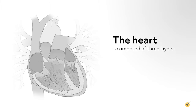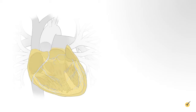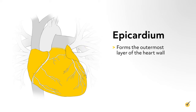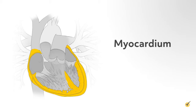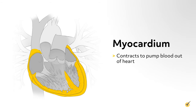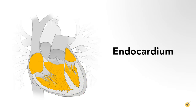The heart is composed of three layers: the epicardium, the myocardium, and the endocardium. The epicardium forms the outermost layer of the heart wall and protects the heart's inner layers. It contains the coronary blood vessels, which supply blood to the heart. The myocardium layer acts like a pump, contracting to pump blood out of the heart and then relaxing to let the heart fill with blood again. The endocardium is a thin inner layer that lines the heart's chambers.